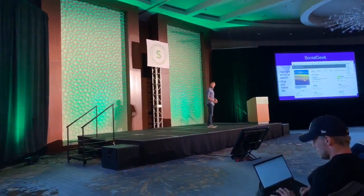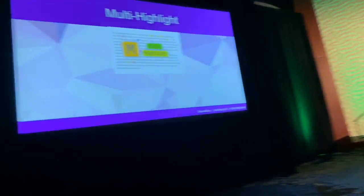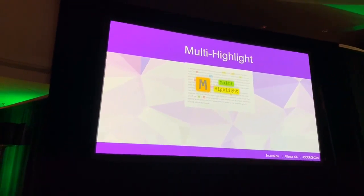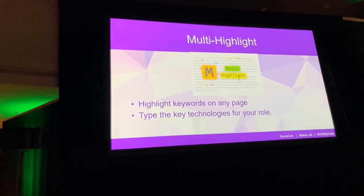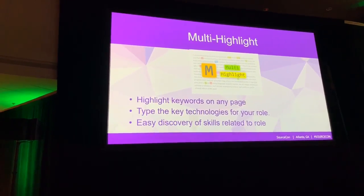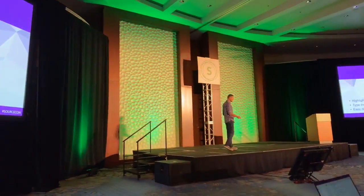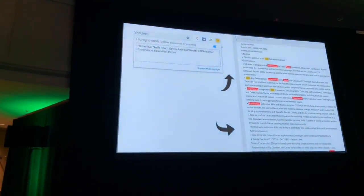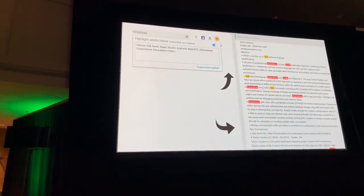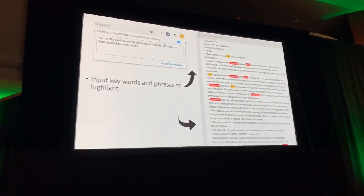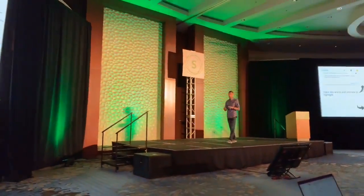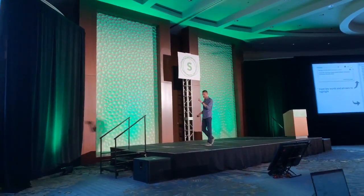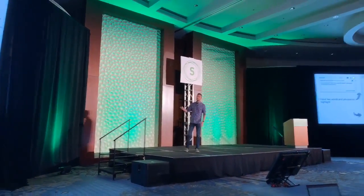The fourth and final tool I want to talk about is multi-highlighting. Probably the most elementary tool I've ever seen in my life, but I swear by it and I love it. I'm sure many people here have used it. It highlights the keywords that you're looking for on a page so they're easily discovered. You can set the technologies for any one of your roles and it makes it easier to discover those skills. The one drawback of multi-highlight is that it only gives you single words — you can't put it in quotes and have multiple words; you have to do one word, space, next word, space, next word.